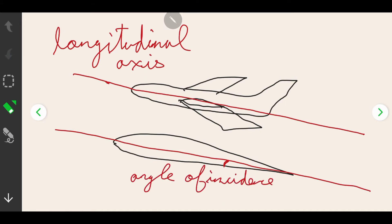This leads us to angle of incidence. Angle of incidence is the angle between the longitudinal axis and cord line.